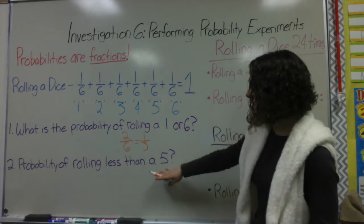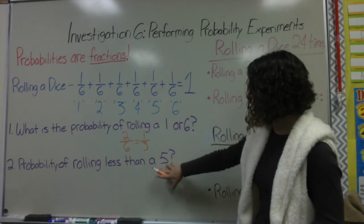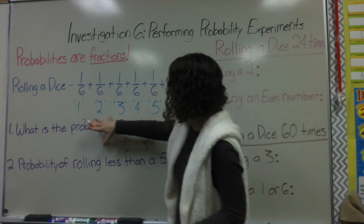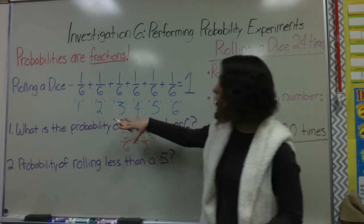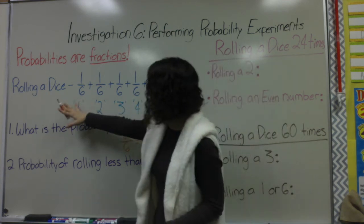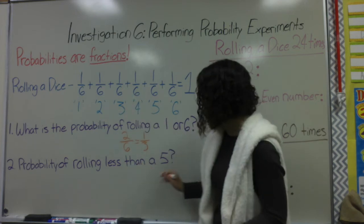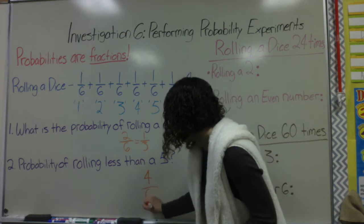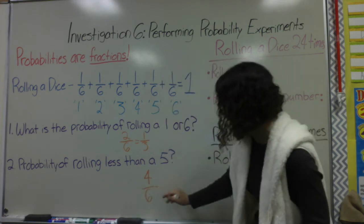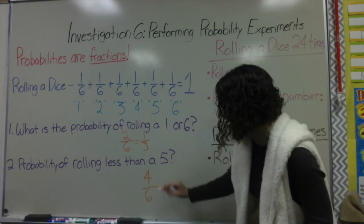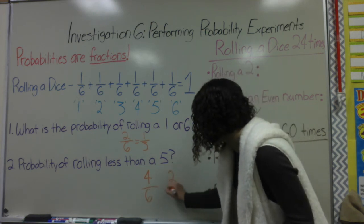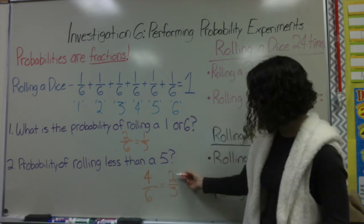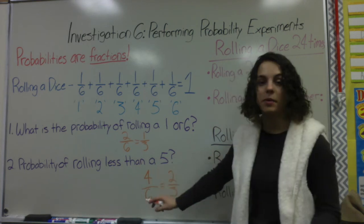Number 2: what is the probability of rolling less than a 5? So not rolling a 5 — 5 is not less than 5 — but rolling less than that. So what is the probability I could roll 1, 2, 3, or 4? That's 4 numbers all together. I have 6 possible outcomes, so the probability of rolling less than a 5 is 4/6. If I were to reduce that, I could divide both 4 and 6 by 2, and my answer would be 2/3. Again, both are correct — you're not required to reduce yet.